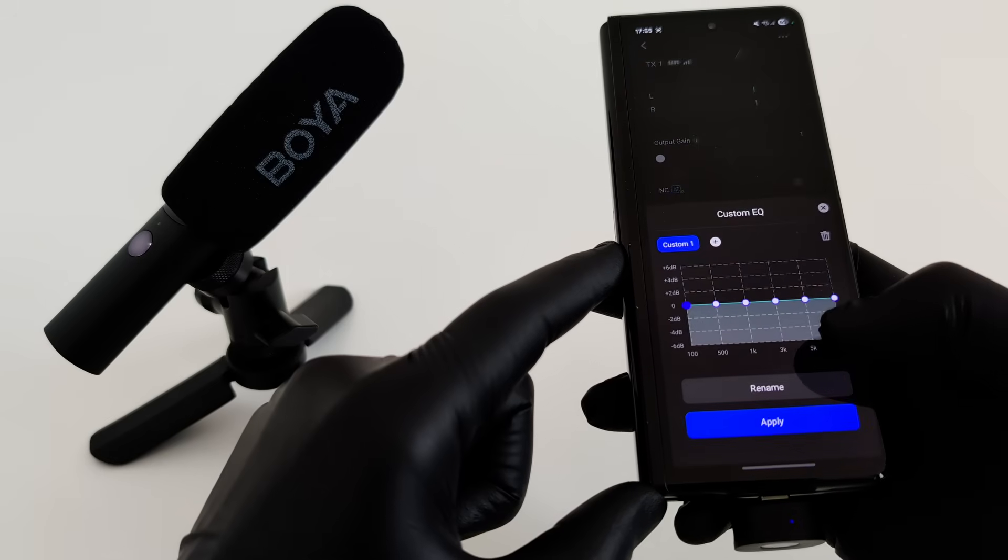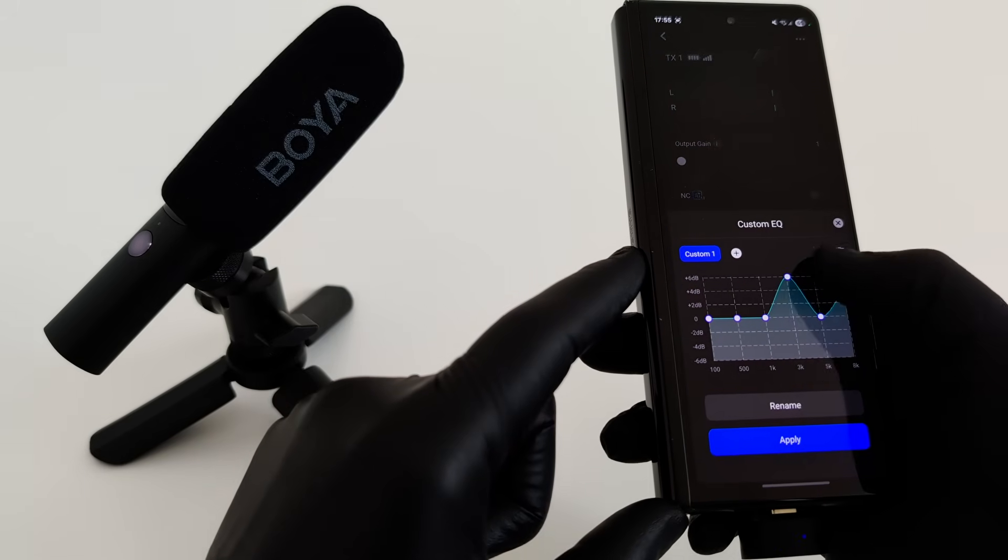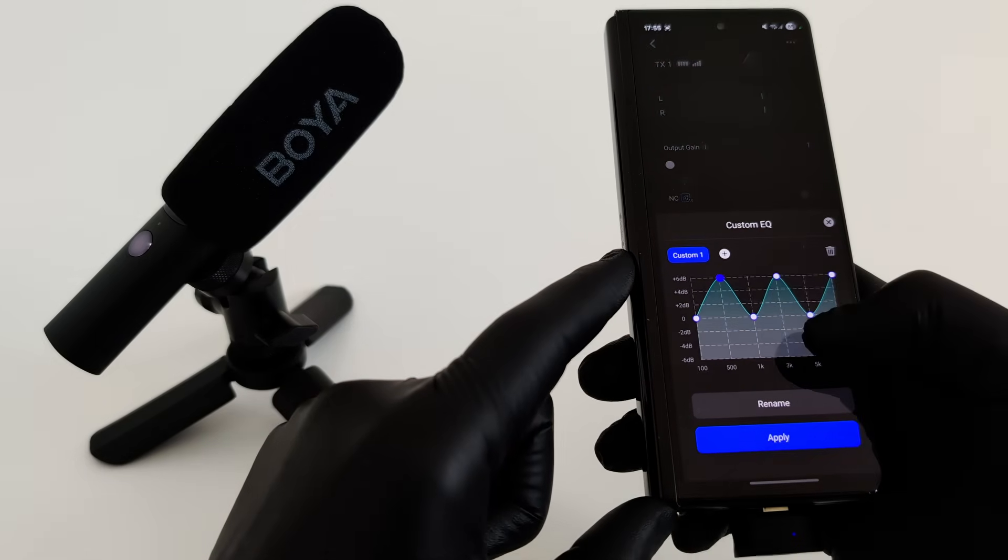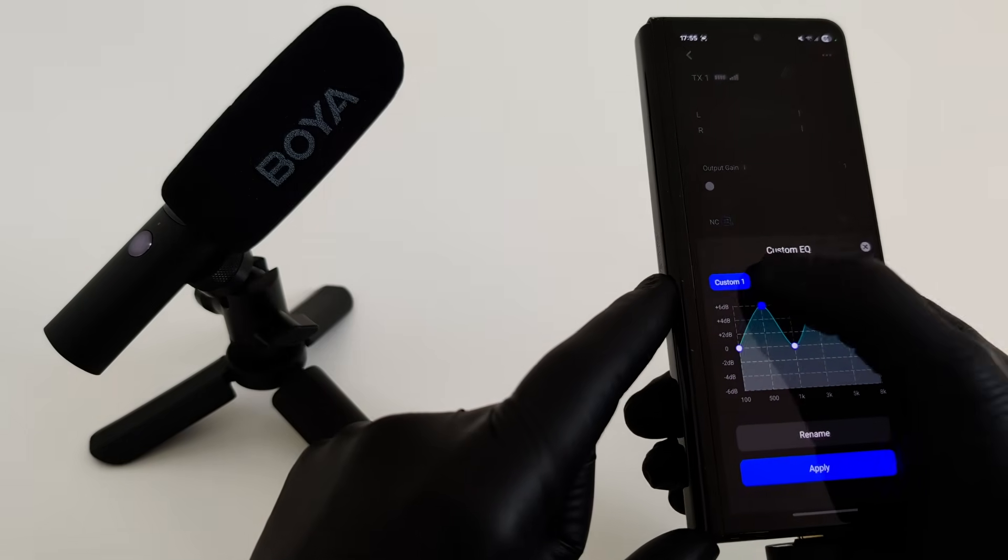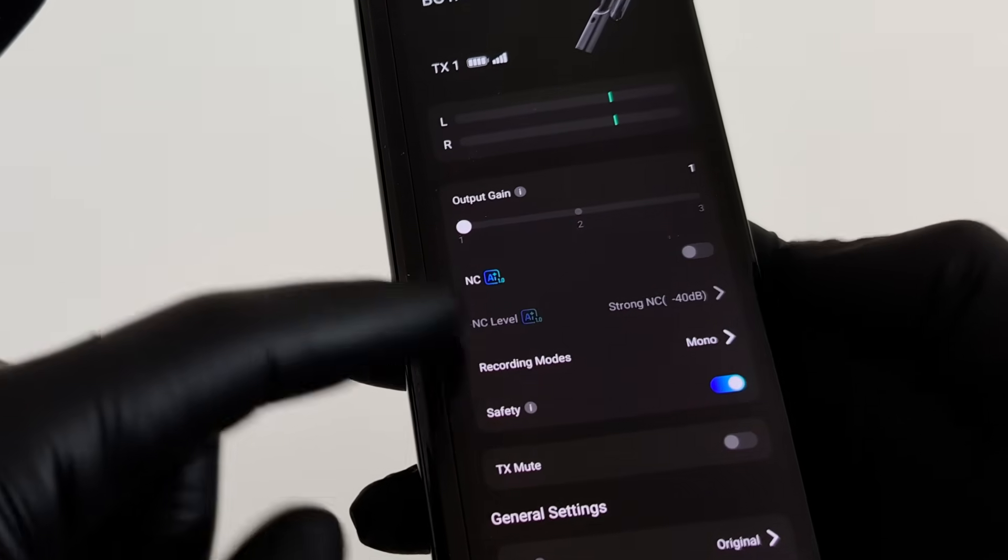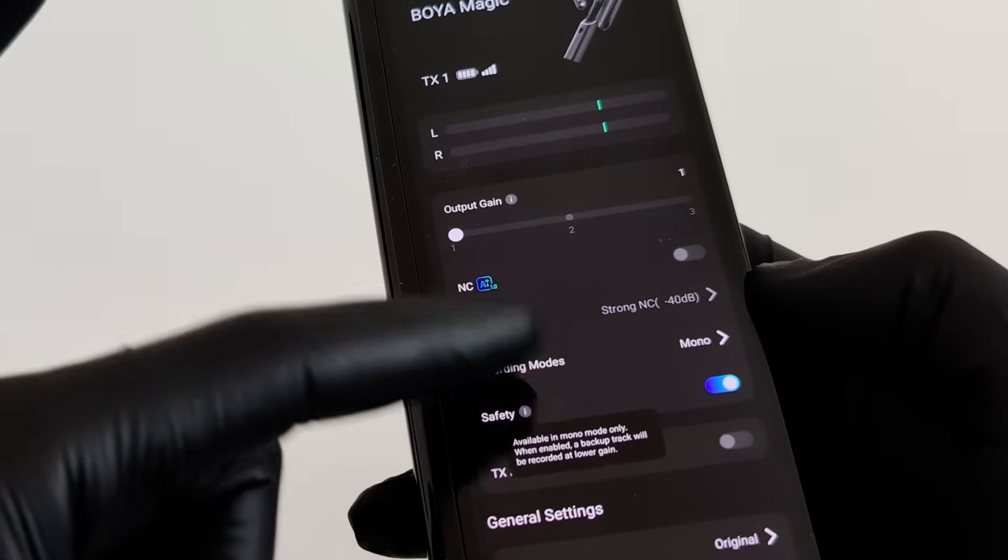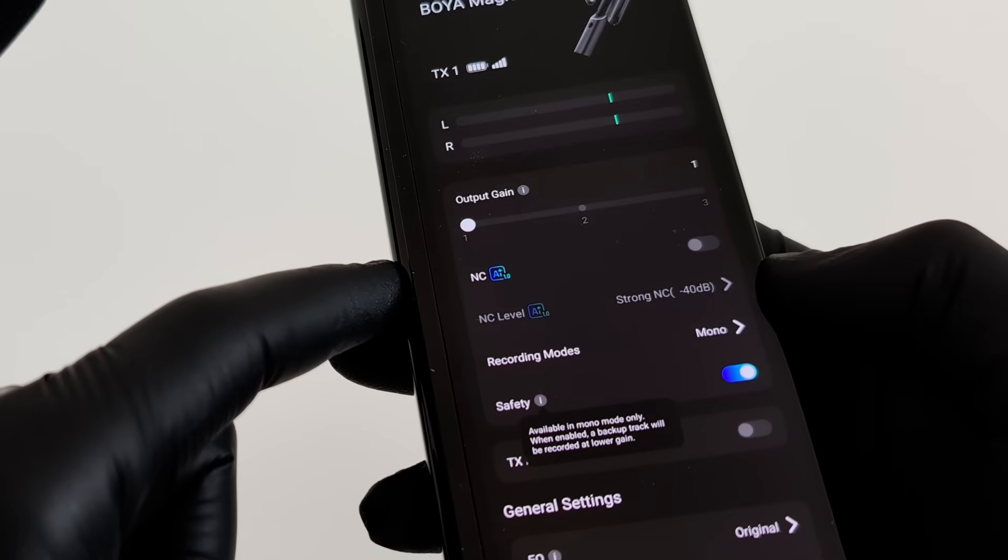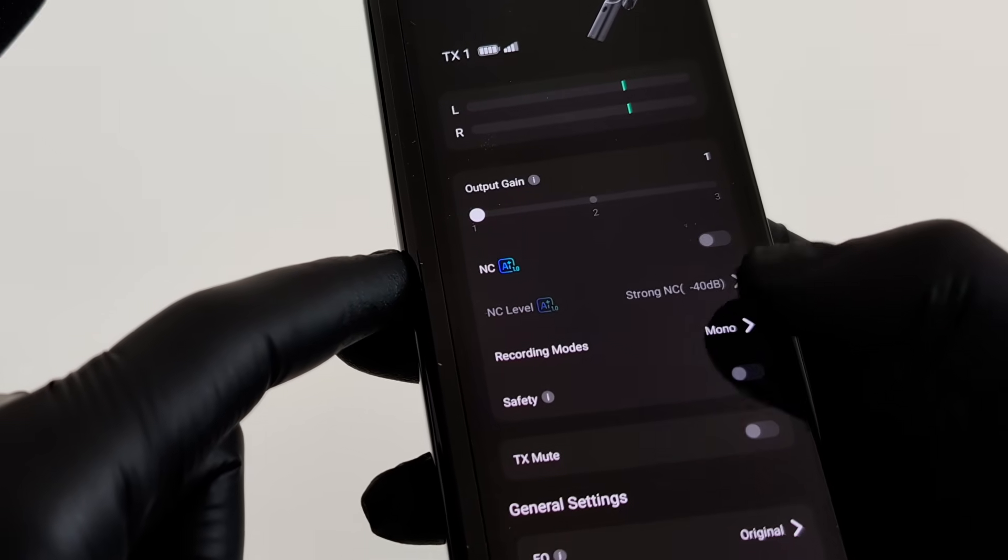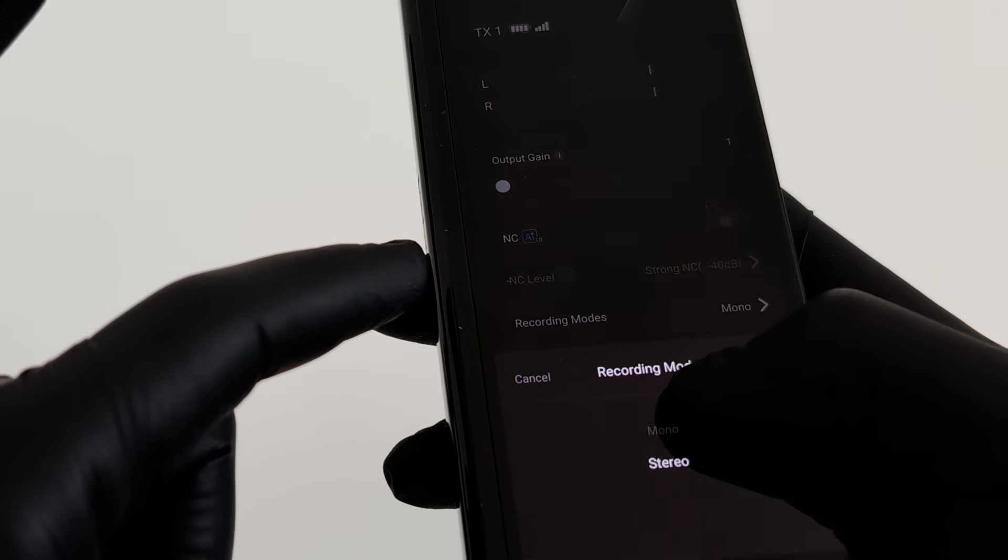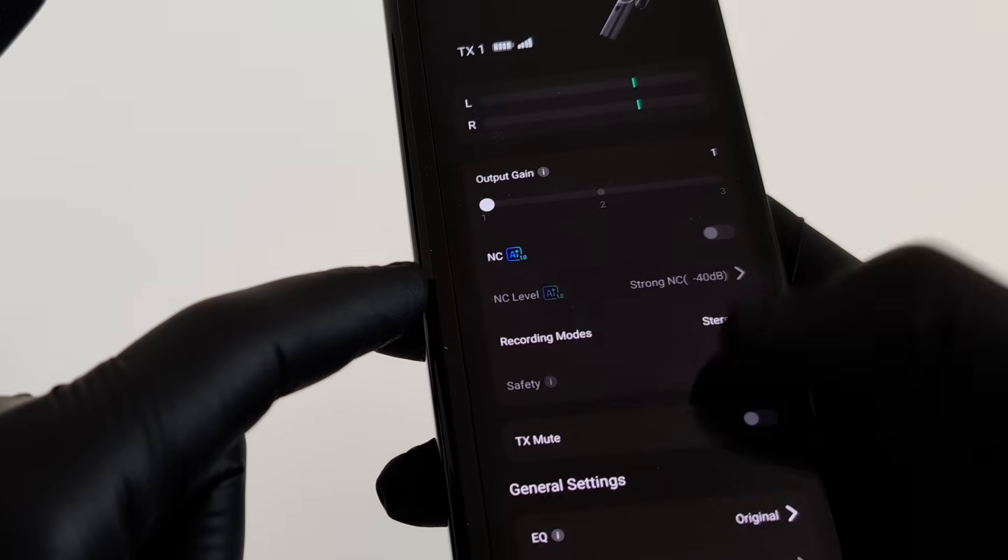But that's not all. This is where you get access to professional tools. You can adjust the gain, choose from equalizer presets for your voice, or activate the safety track feature. This is a priceless option. The system records a second audio track 12 decibels quieter than the main one, a true safeguard against clipping and ruined audio.